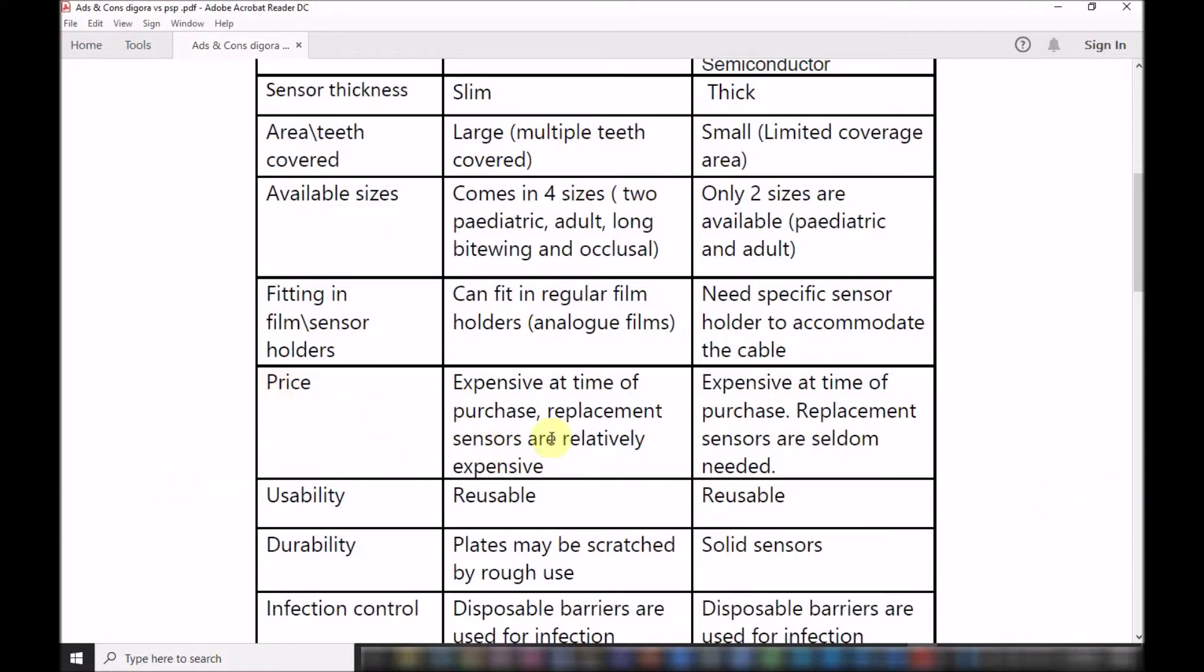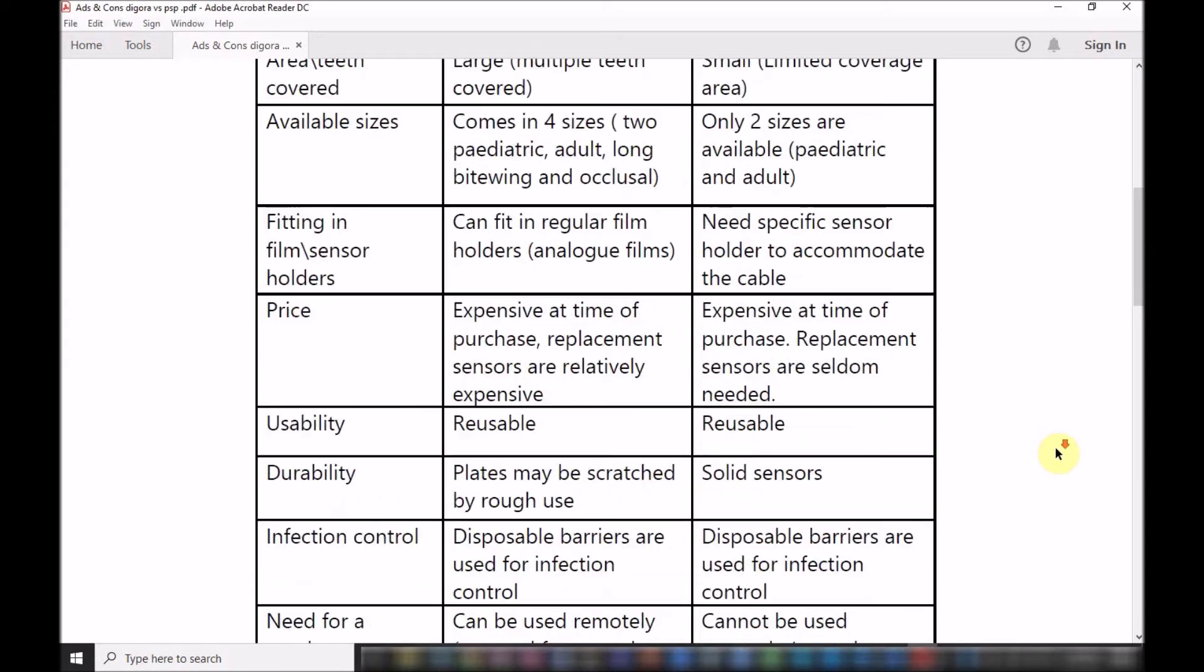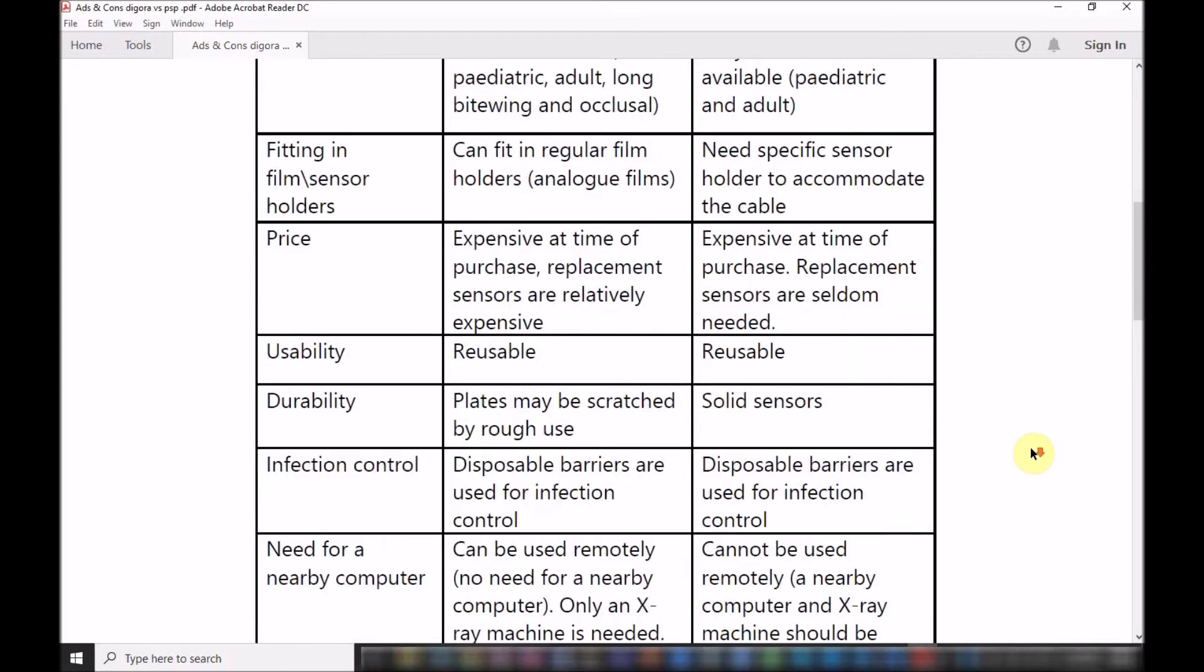When it comes to price, both of them are expensive at the time of purchase. However, in the indirect type, you need to replace these sensors because they tend to scratch and they lose their proper image quality. The direct sensors are expensive at the beginning but it's only at the time of purchase and they seldom need replacement because they work for a longer time. The indirect type tends to degrade as they age, so at the end of the road these tend to be more expensive.